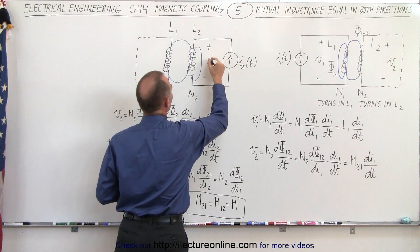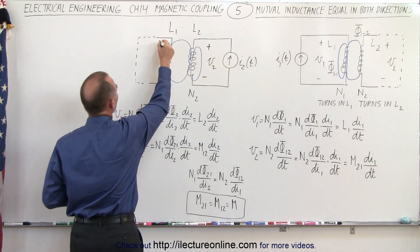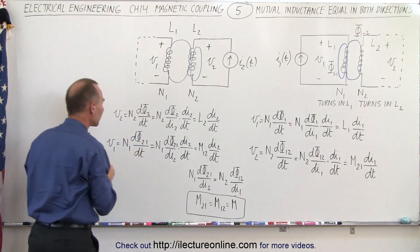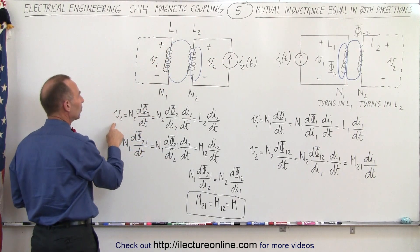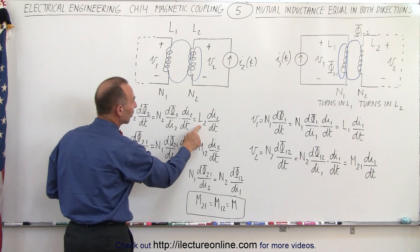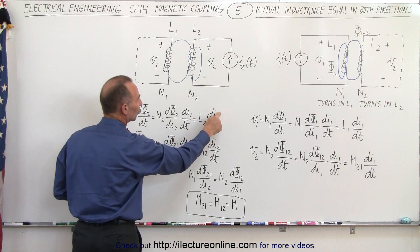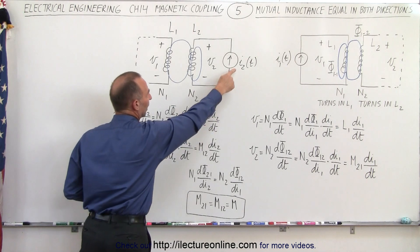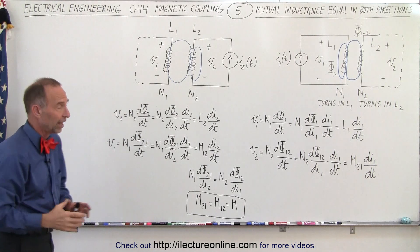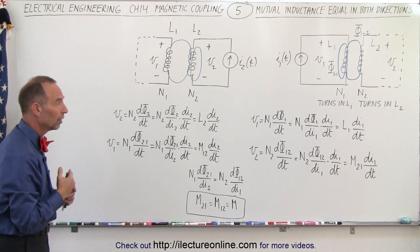The voltage across this inductor, let's call it V sub 2, and this would be V sub 1. V sub 2 will be equal to the self-inductance times the rate of change of the current caused by this current source with respect to time. So it works exactly the same on the other circuit.